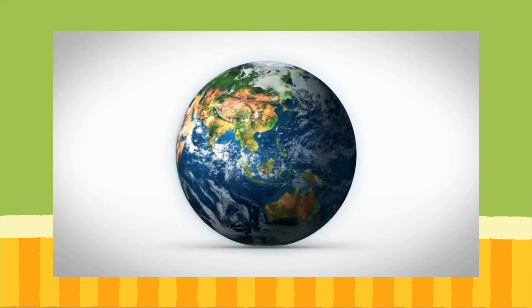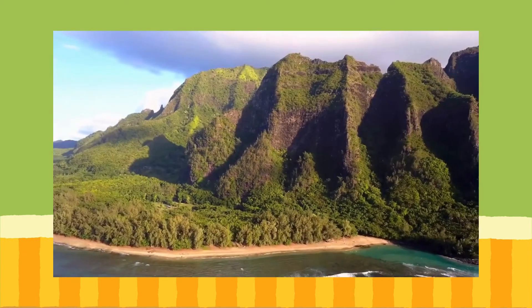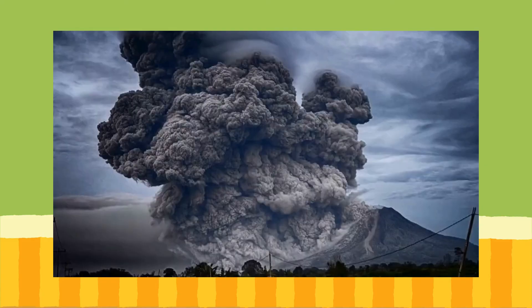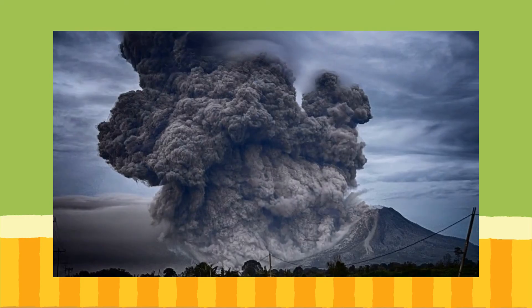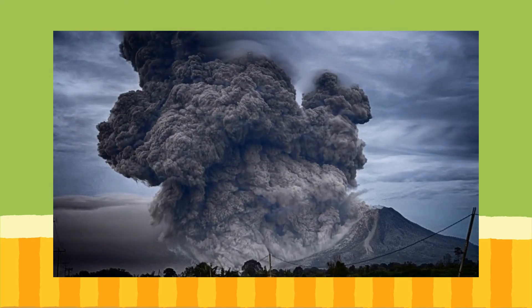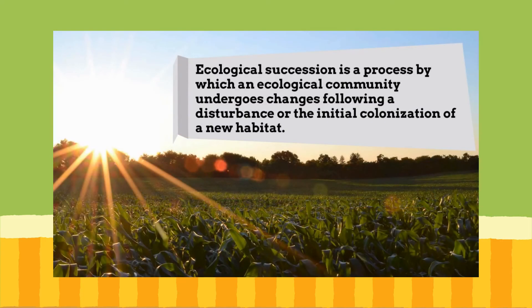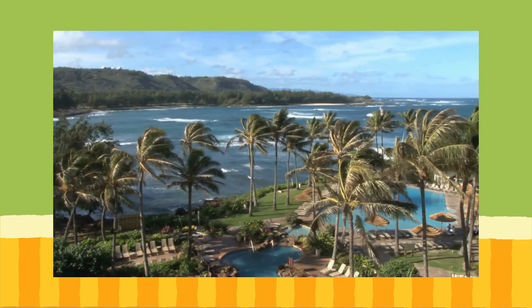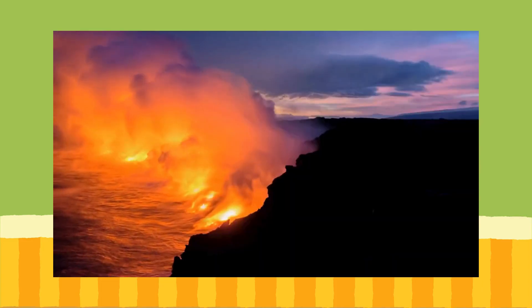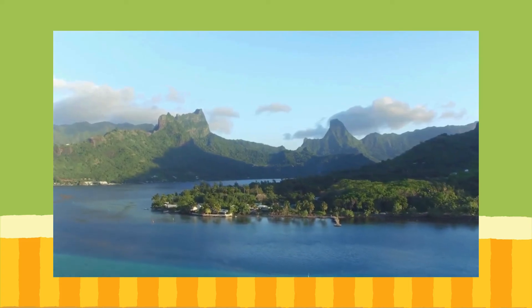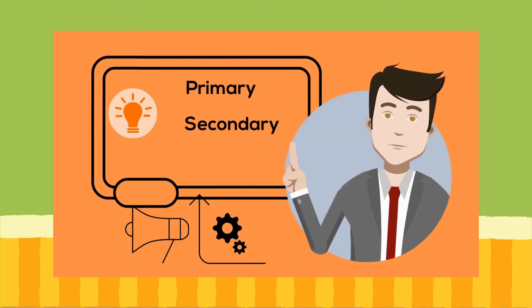Our world is constantly changing. New islands are being created. Fires burn in forests. Volcanoes explode and destroy areas. Nothing remains the same and habitats are constantly changing. Ecological succession is a process by which an ecological community undergoes changes following a disturbance or the initial colonization of a new habitat. For example, the islands of Hawaii were formed from volcanic activity. From their fiery start, over time, they became tropical islands.